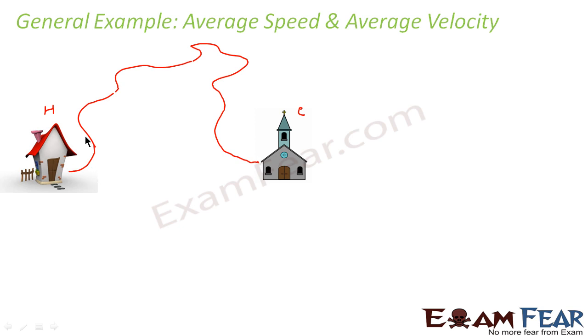Now if this is the path which Ronnie follows from his home to reach the church, if I ask you to find the average speed and average velocity, what will be average speed? Average speed is equal to the total distance traveled divided by the time taken. That means the total distance that he is covering by following this path. Let us say that distance is equal to D. So this average speed will be equal to D divided by the time taken.